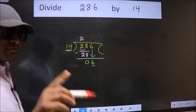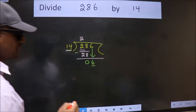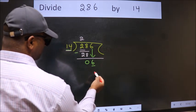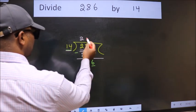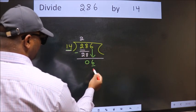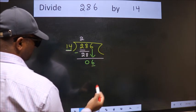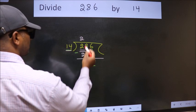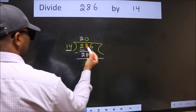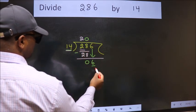Instead of that, what we should think of doing is which number should we take here. If I take 1, we will get 14. But 14 is larger than 6. So what we do is we take 0 here. So 14 into 0 is 0.